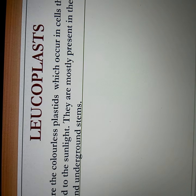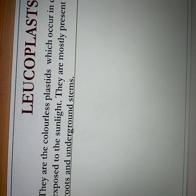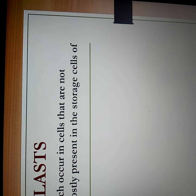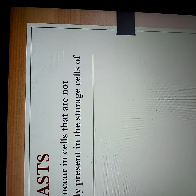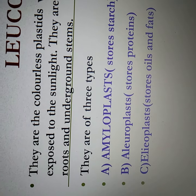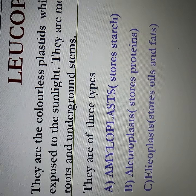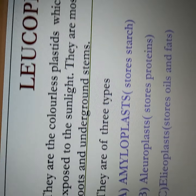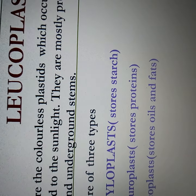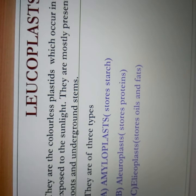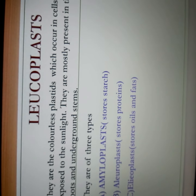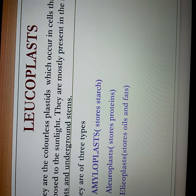Leucoplasts are the colorless plastids occurring in cells not exposed to sunlight, mostly present in storage cells of roots and underground stems. They are of three types: amyloplasts, which store starch; aleuroplasts, which store proteins; and elaioplasts, which store oils and fats. In this class we have learned the structure and function of two important organelles: Golgi bodies and plastids. Thank you children, have a nice day.